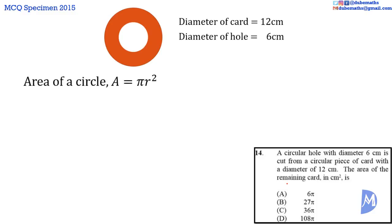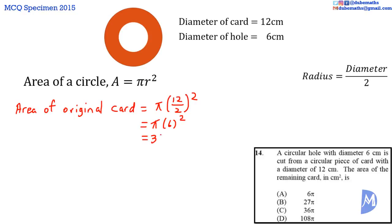The area of a circle is equal to pi r squared. Therefore, the area of the original card is equal to pi times 12 divided by 2 squared. Remember that the radius is equal to the diameter divided by 2, which is equal to pi multiplied by 6 squared. 6 squared is 36, so this is equal to 36 pi.